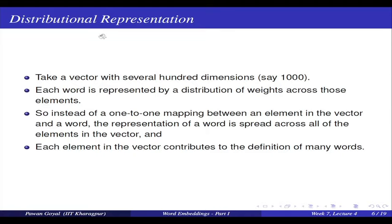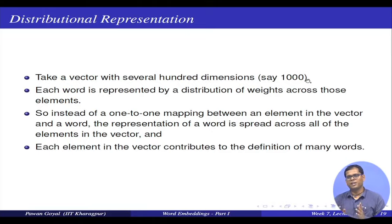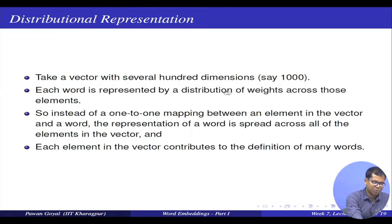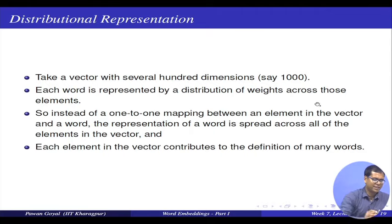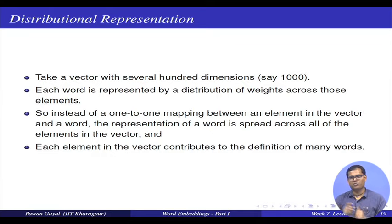So what is my distributed representation? Take a vector with several hundred dimensions — it can be 100, 50, 300, or 1000. Each word is represented by a distribution of weights across these dimensions. Instead of a one-to-one mapping between an element in the vector and a word, you have a distributed representation of each word. By using that, you can capture similarity: if two words have similar weights in many dimensions, then they will be similar.